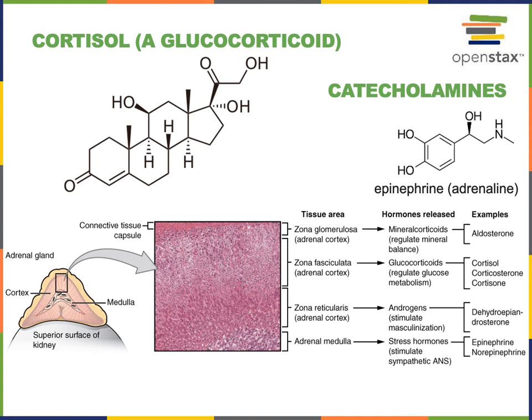Norepinephrine is also produced by the adrenal medulla in response to the sympathetic nervous system. Both catecholamine hormones — epinephrine and norepinephrine — are produced rapidly in response to sympathetic nervous system activity as an alarm phase of the stress response, working to increase heart rate and blood glucose levels and helping mobilize energy reserves. Cortisol is produced in response to the hormonal stimulus of ACTH from the anterior pituitary.